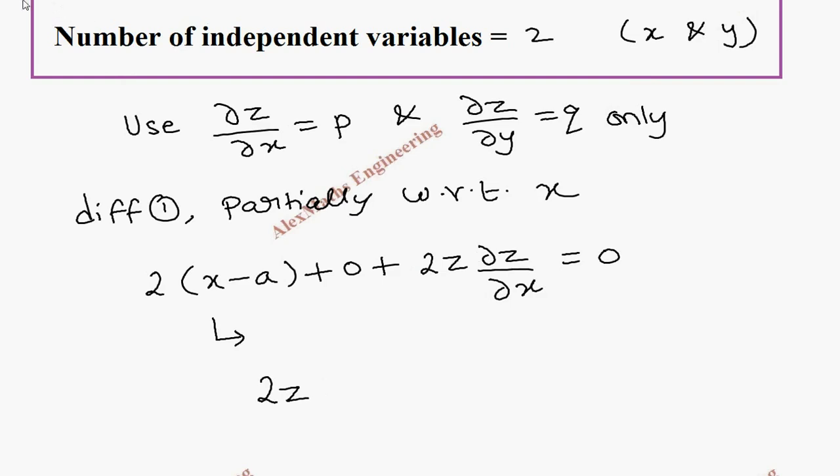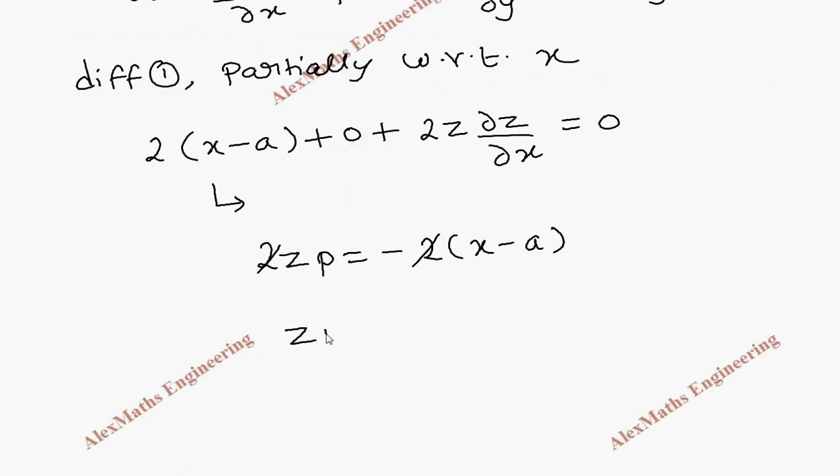So 2z·∂z/∂x, which is p, equals -2(x - a). We can cancel the 2s, so we get zp = -(x - a), or x - a = -zp. Let's keep this as the first expression.